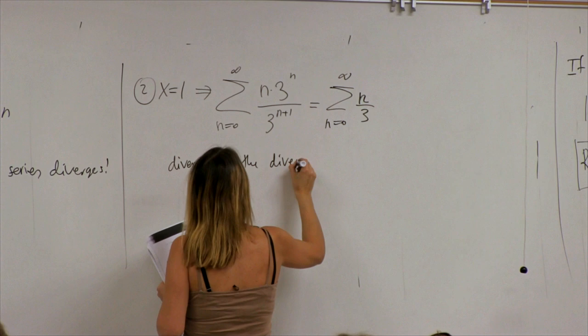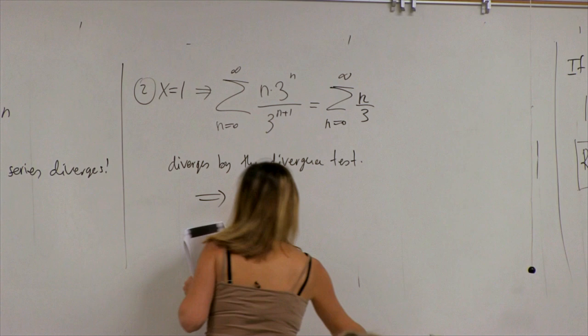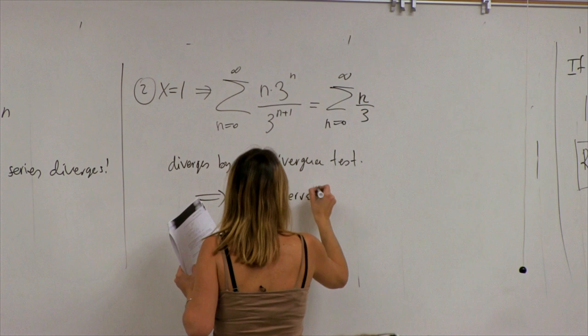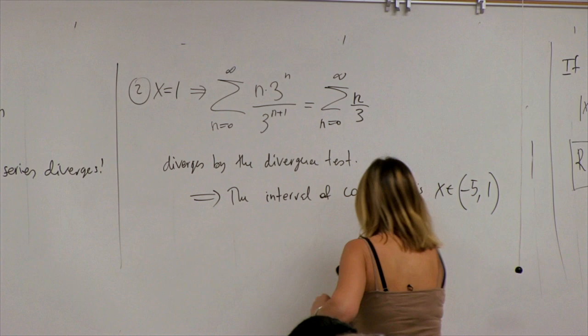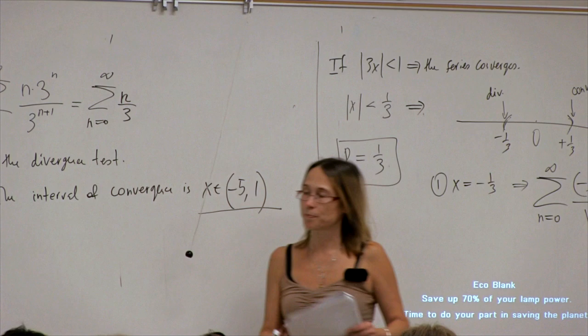So the interval of convergence is x belonging to the open interval from −5 to 1, not including either endpoint. Both endpoints diverge. Thank you very much, and have a happy Thanksgiving.